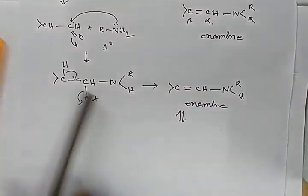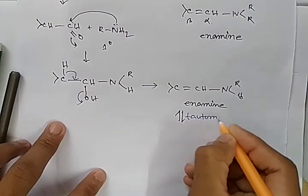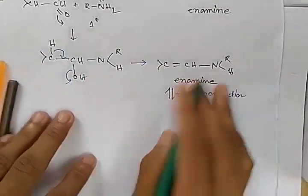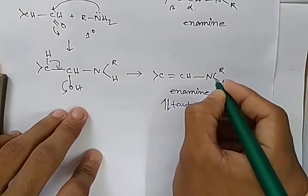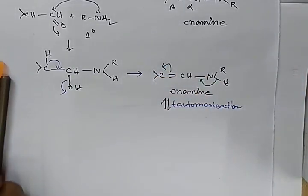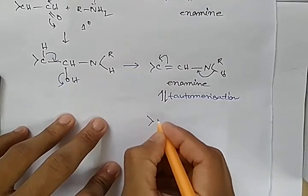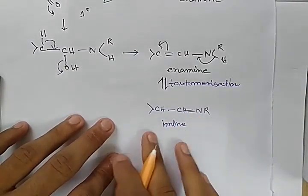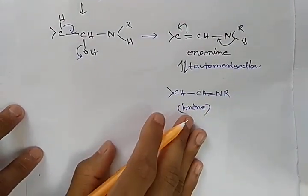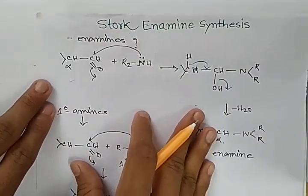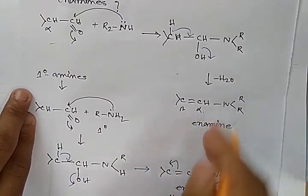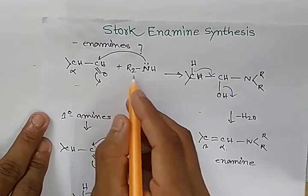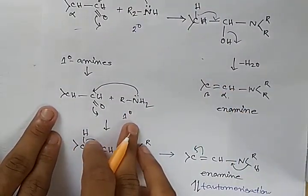But this system will undergo further tautomerization. Because this hydrogen falls here and opens up, we get a system like this — an imine-like structure. This is the structure of an imine. So an enamine is an unsaturated compound formed by treatment of an aldehyde or ketone with a secondary amine, or you can also use a primary amine.